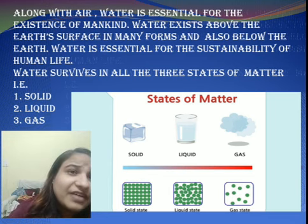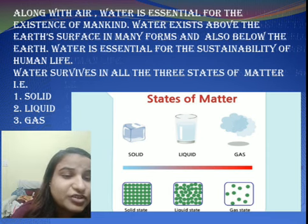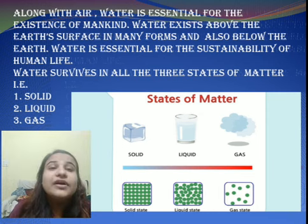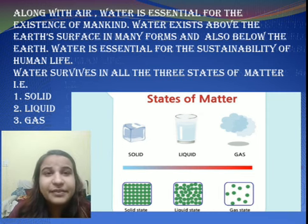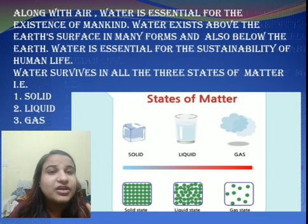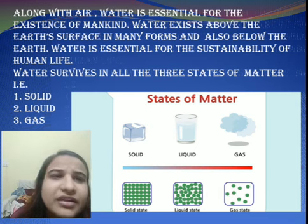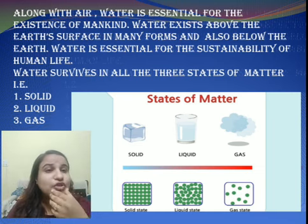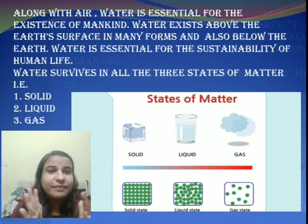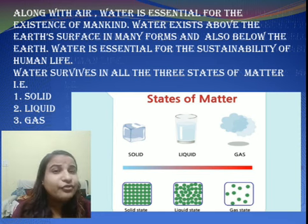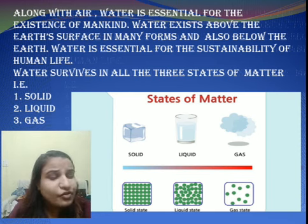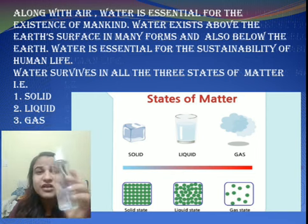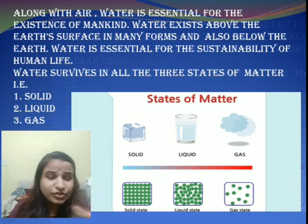Water survives in all three states of matter. The three states of matter are: first, solid; second, liquid; third, gas. As you can see in the picture, an ice cube is solid. The small green particles you see in the box are the molecules — everything is made up of molecules. The solid molecules are closely packed; they do not have any kind of space between them. This bottle is also an example of a solid.